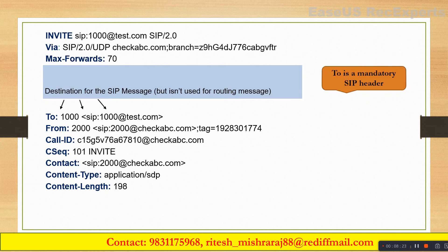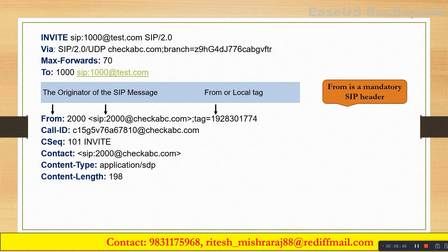The To header is also a mandatory SIP header and it shows you the destination for this particular SIP message. However, the To header is not used for routing — only the INVITE header is used for routing. The To header just shows you the destination. The From header shows you the originator of the SIP message — who initiated it. So in a call flow with IP phone, Call Manager, and CUBE, if you collect the log at the CUBE, you will see the originator as the IP phone. I'll make another video for From tag, To tag, and branch ID in the Via header.